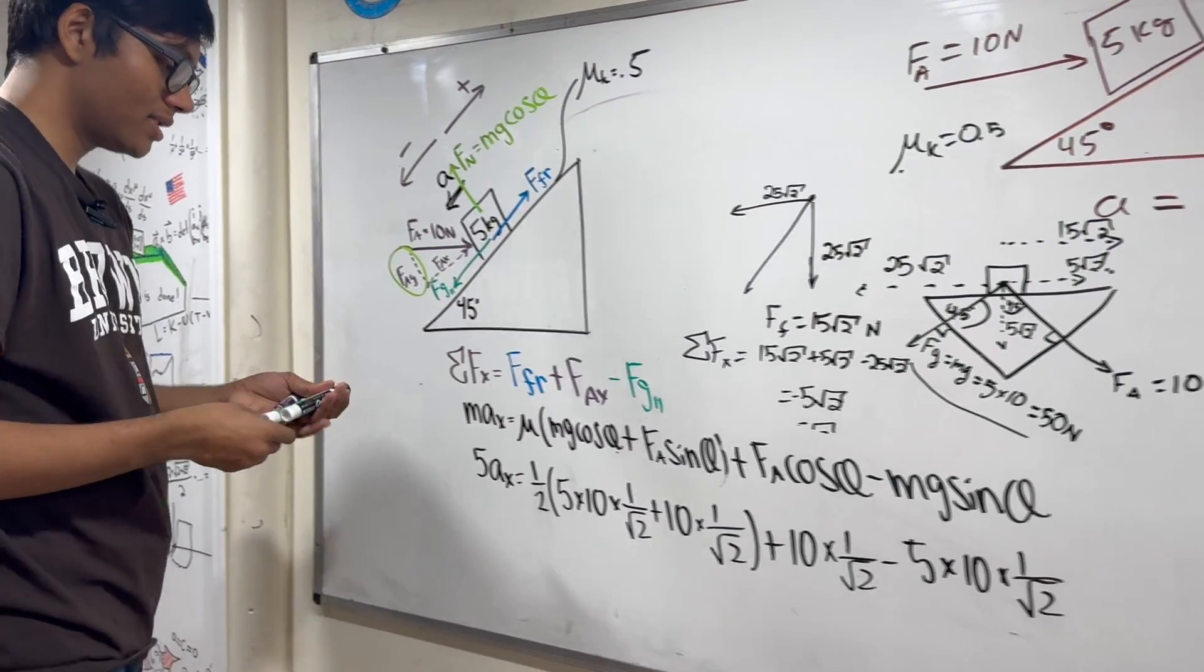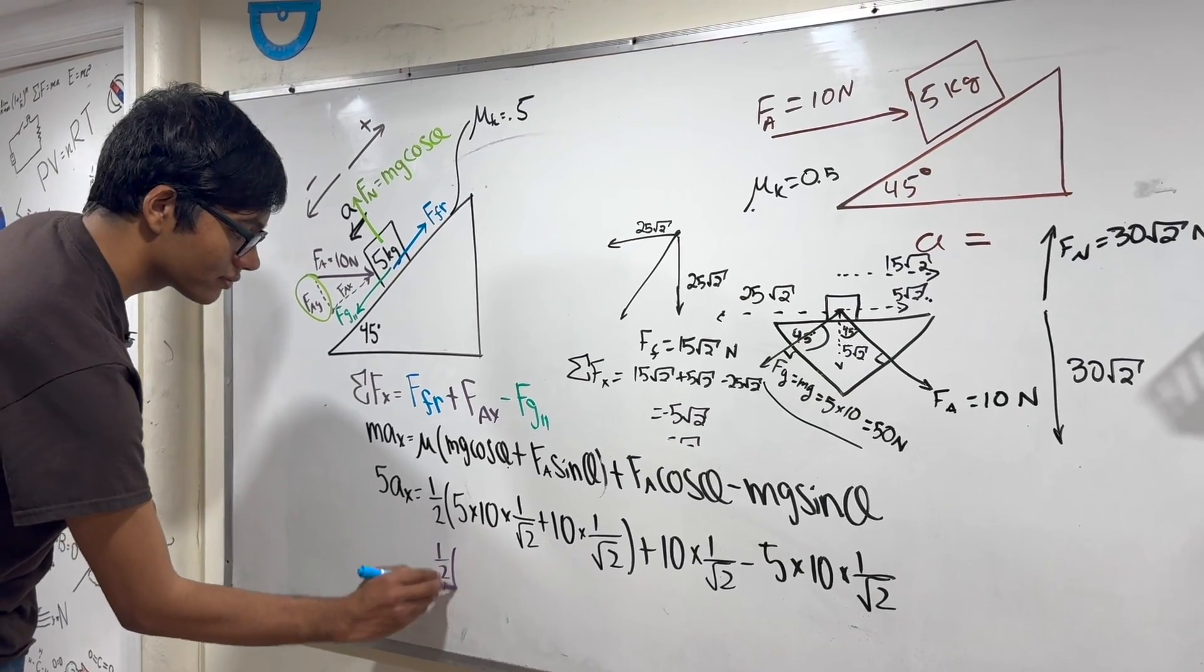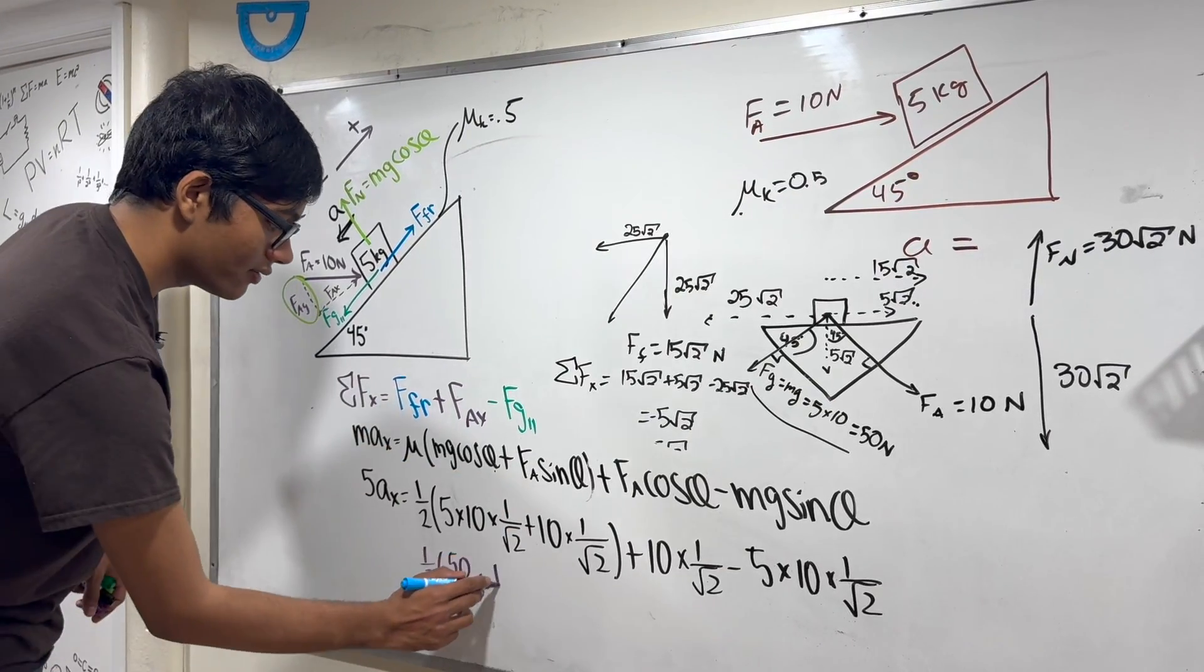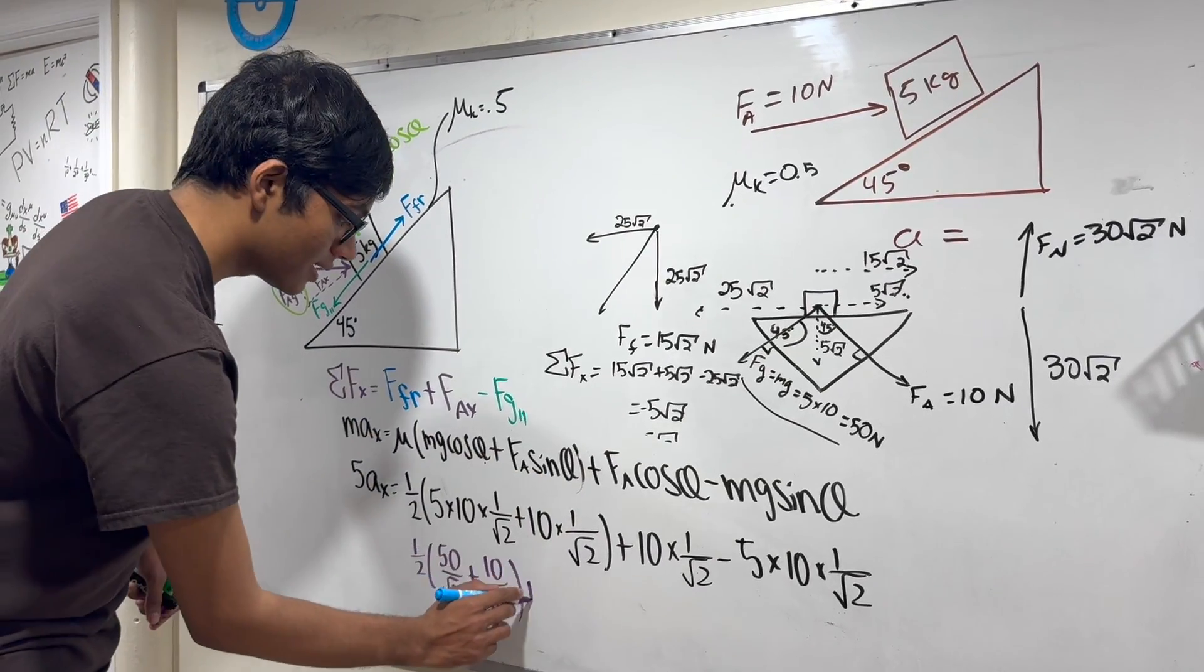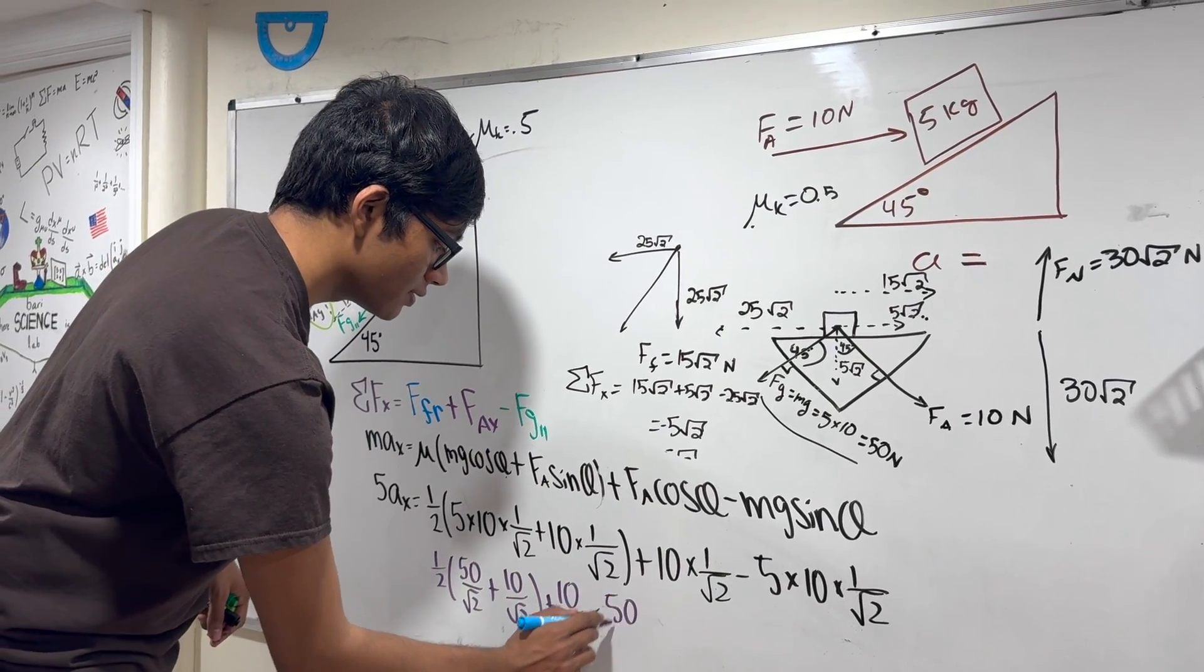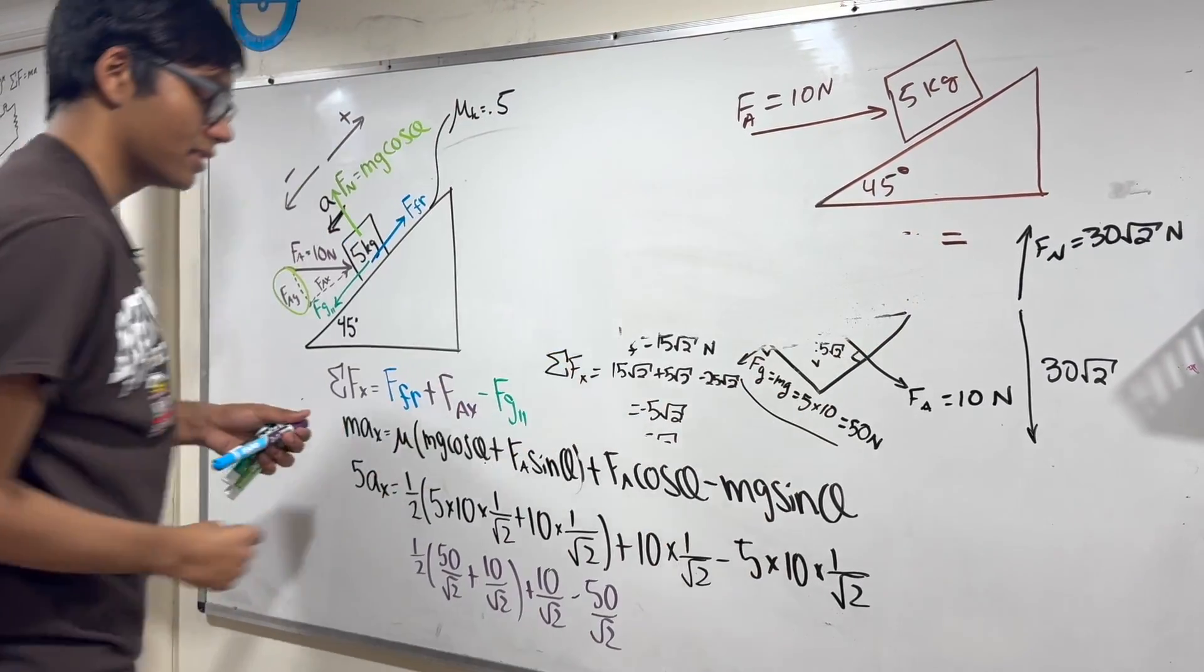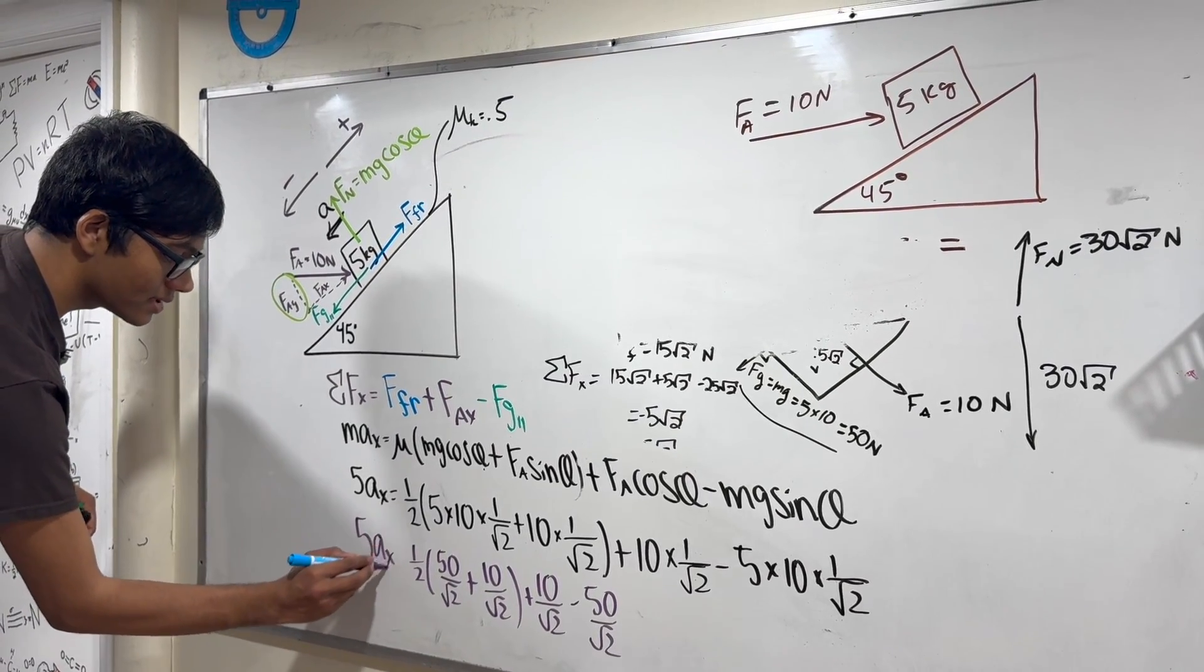Now let's do the math. You don't need a calculator. So 1 over 2, 5 times 10 is 50. So 50 over the square root of 2 plus 10 over the square root of 2 plus 10 over the square root of 2 minus 50 over the square root of 2. I'm going to bring it to the top here so we can finish the math. All of this is equal to 5 times the acceleration.